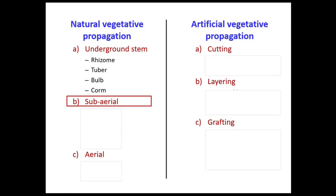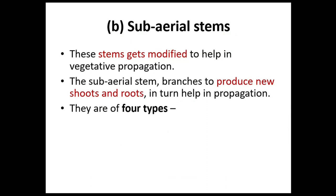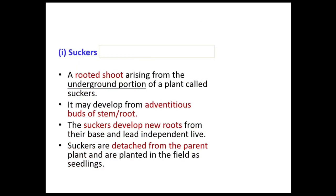The next category is sub-aerial propagation. Here, the stem gets modified to help in vegetative propagation — the sub-aerial stem branches produce new shoots and roots, helping in propagation. There are four types: suckers, runners, stolons, and offsets. These are neither completely above ground nor completely below ground, which is why they are called sub-aerial.